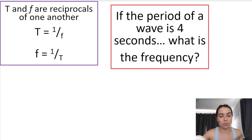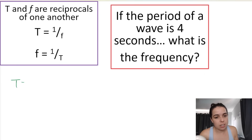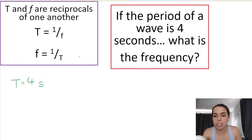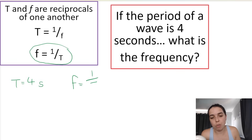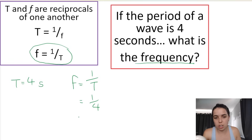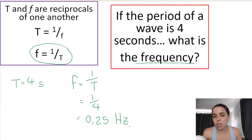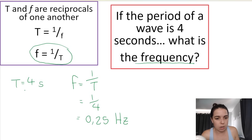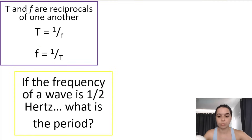Let's test our knowledge. If the period of a wave is four seconds, what is the frequency? Using the formula: f = 1/T, so f = 1/4. What is one quarter? It is 0.25. Your unit for frequency is hertz. So the frequency is 0.25 hertz.